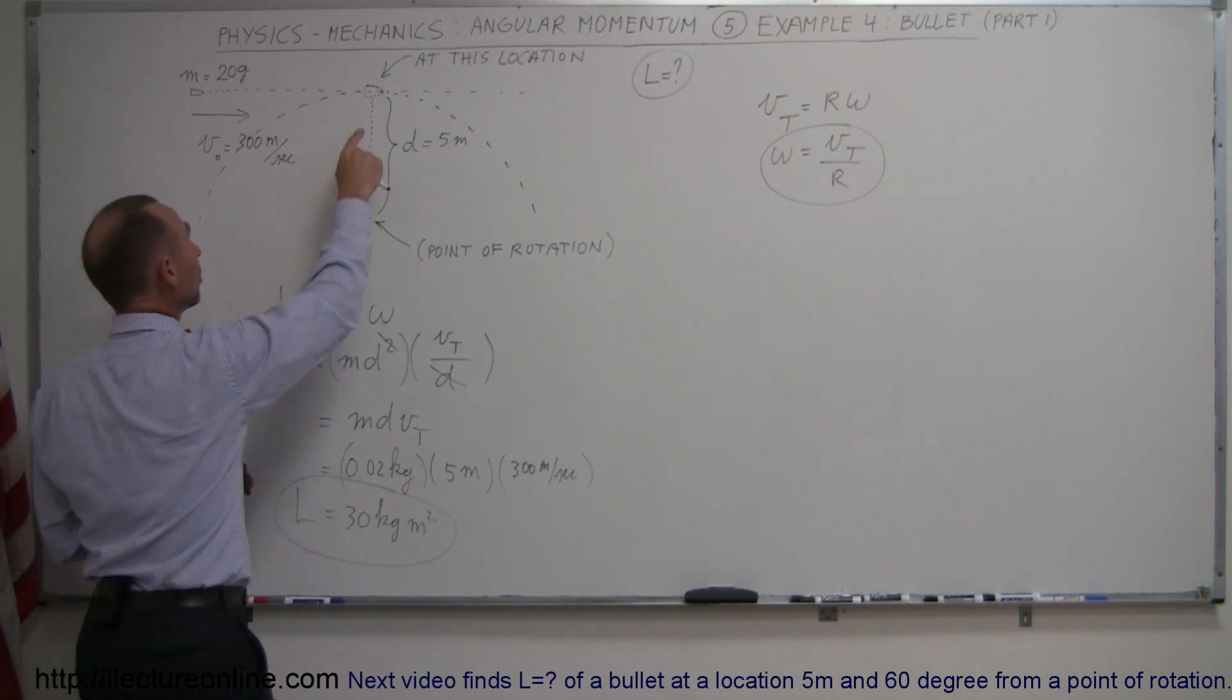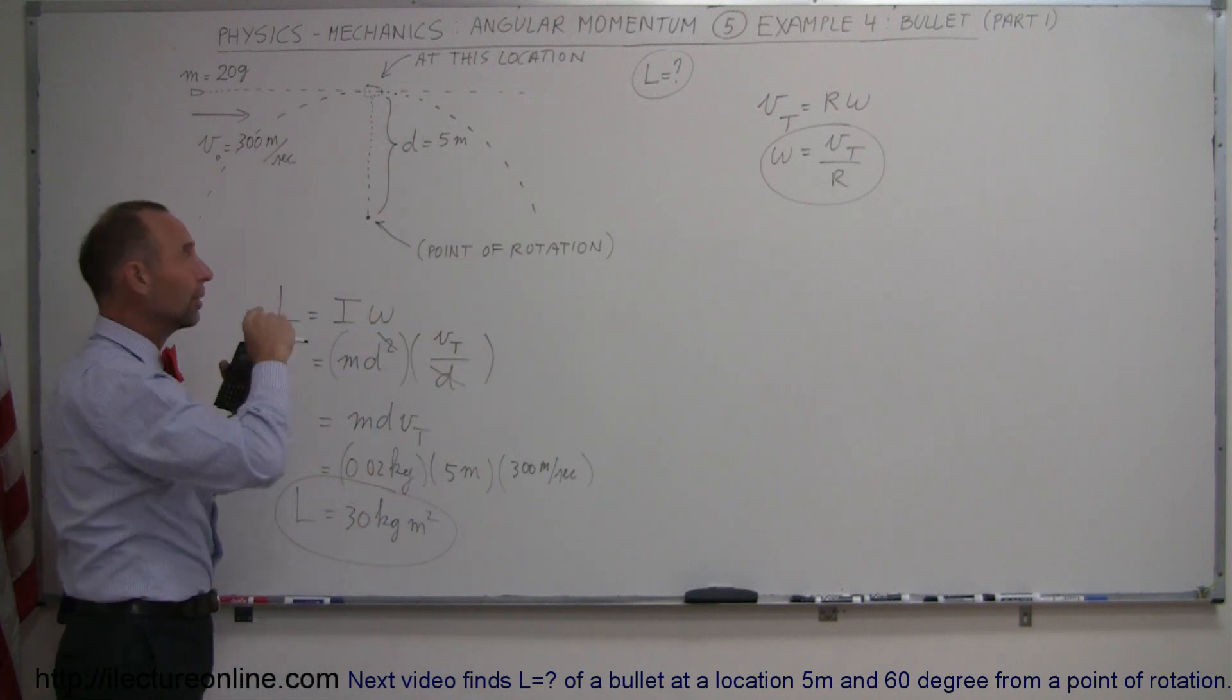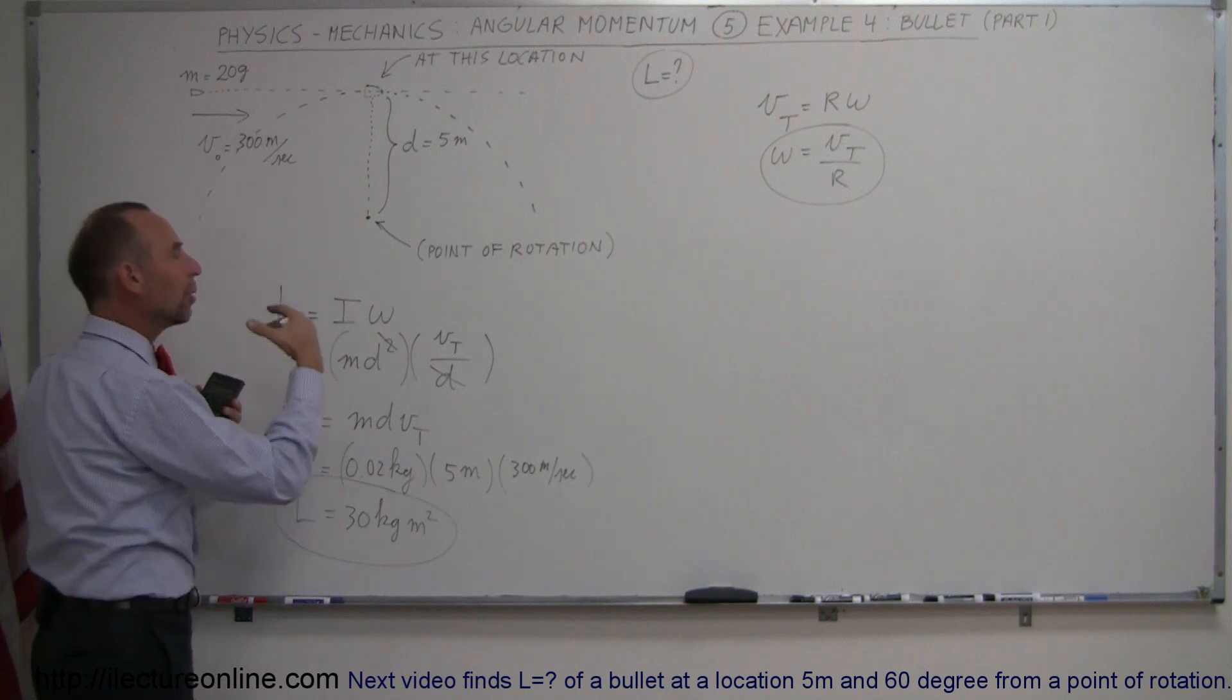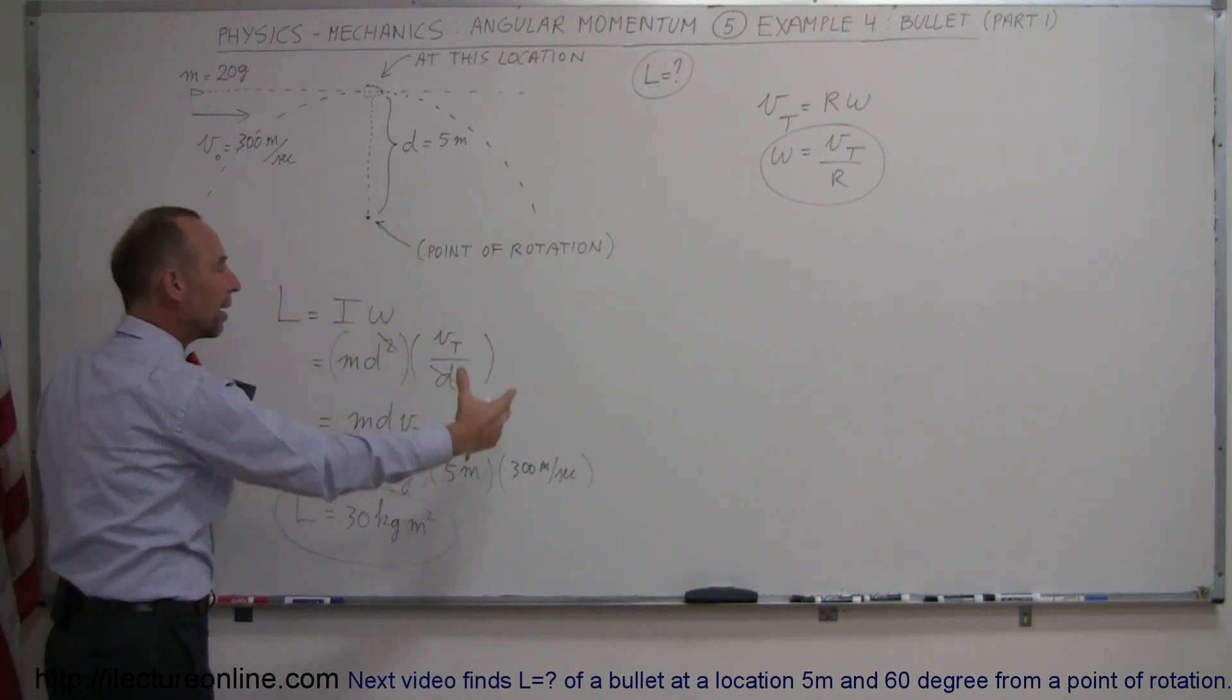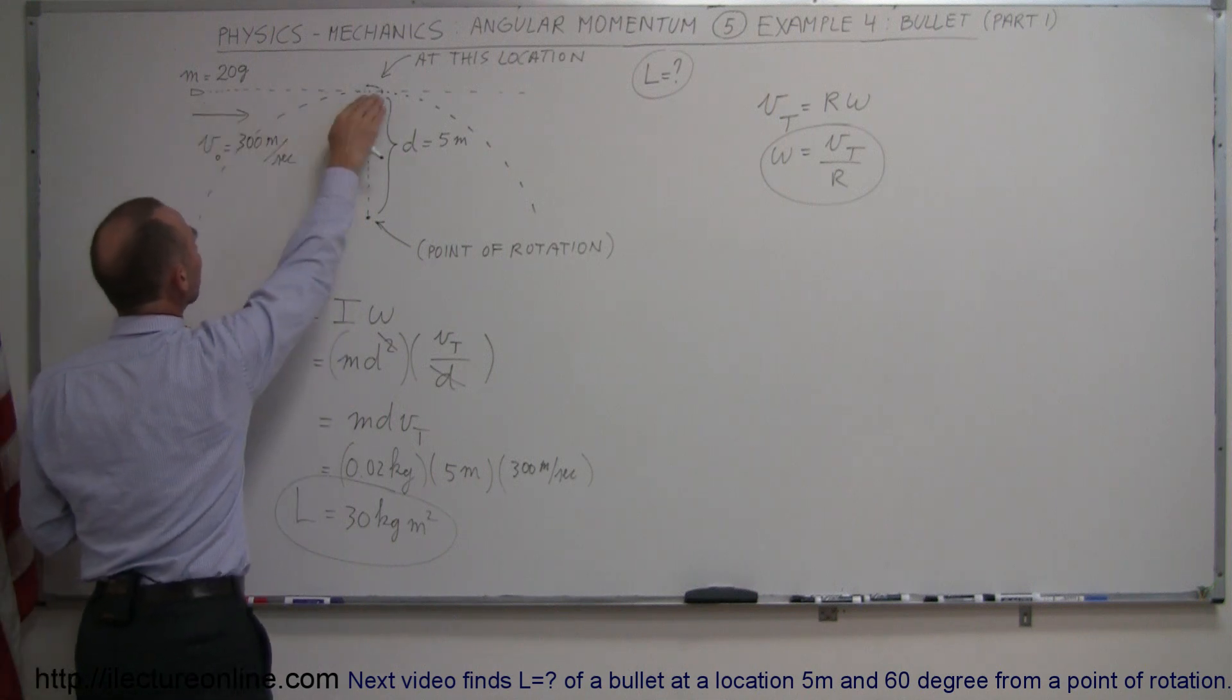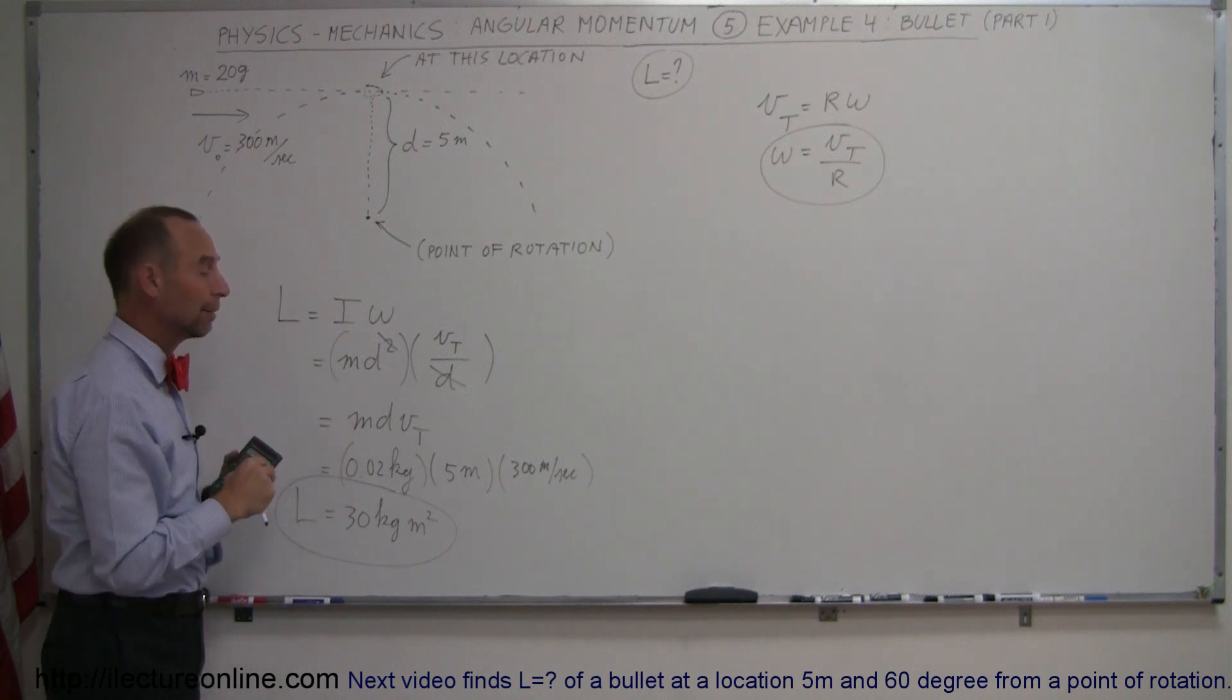Well, let's assume then that this bullet now strikes a disk or strikes a post or strikes something that is able to rotate. Then it contributes to the angular momentum of the bullet and the object after the collision. And that's why we have to be able to translate linear momentum to angular momentum to make that happen. In a future video, I will show you how to do that.